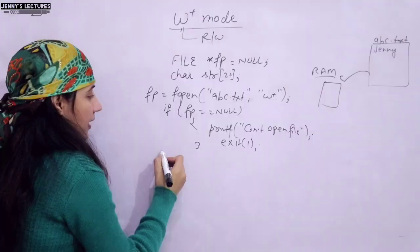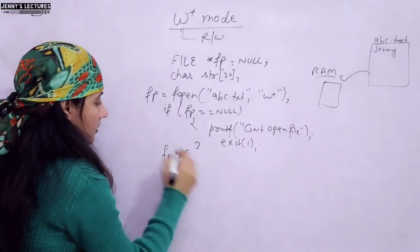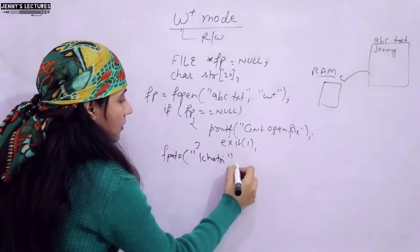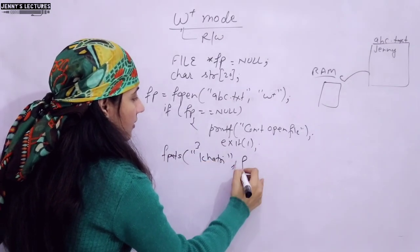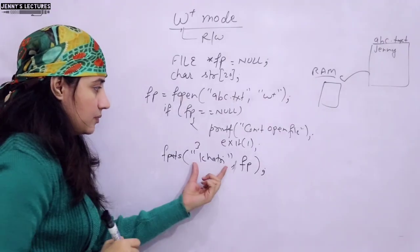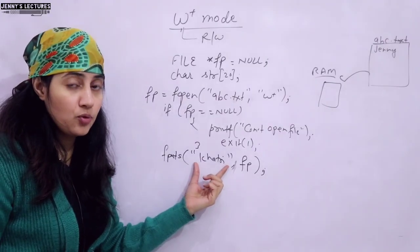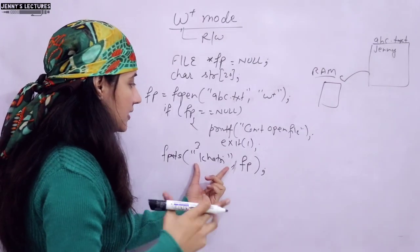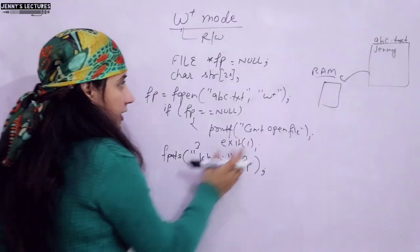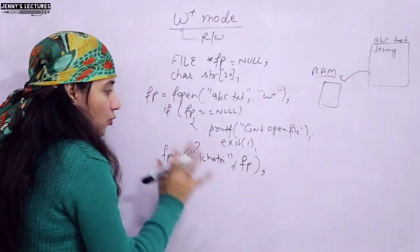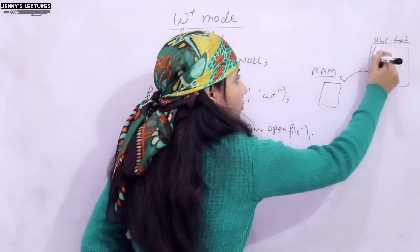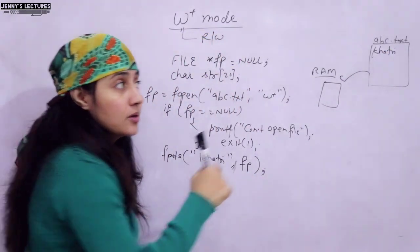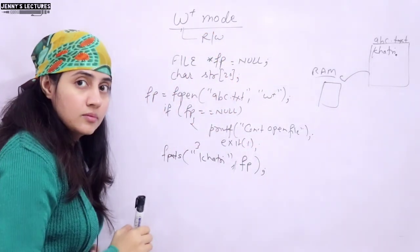Now suppose I am writing here: fputs and I am writing a string like 'Khatri' in FP. You can also take input from the user — many possibilities are there, you can try different things. So I want to put 'Khatri' into this file. What happens now? This 'Jenny' would be erased and 'Khatri' would be there. Now at this point the cursor is at the last position.